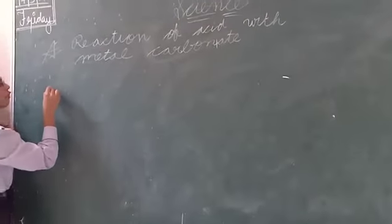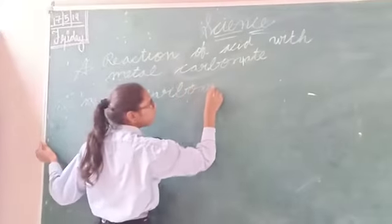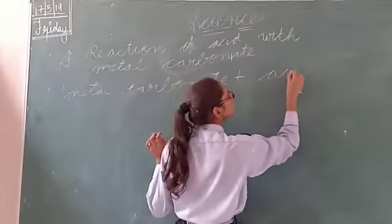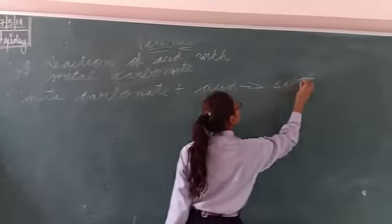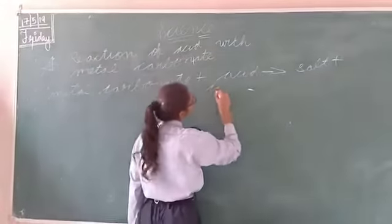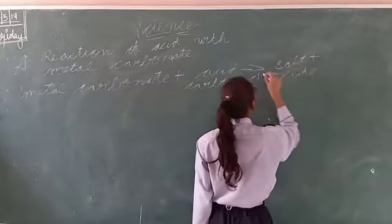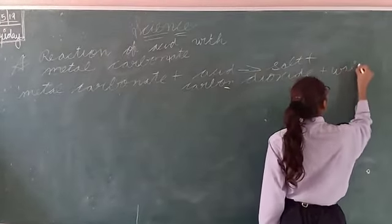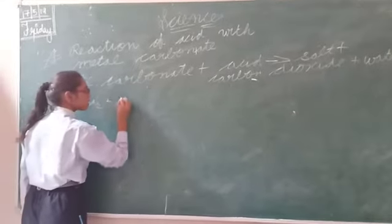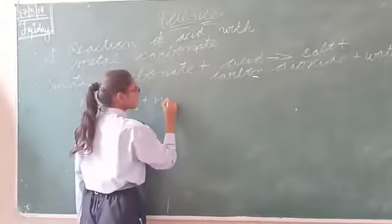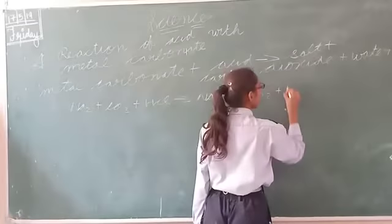Metal carbonate, when left with acid, gives out salt plus CO2 plus water. For example, Na2CO3 plus HCl gives out NaCl plus CO2 plus H2O.